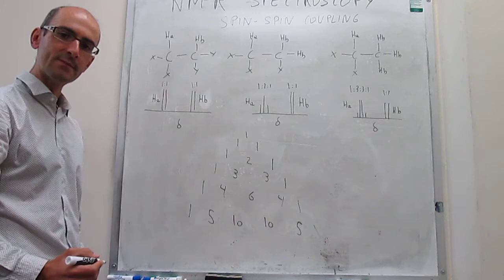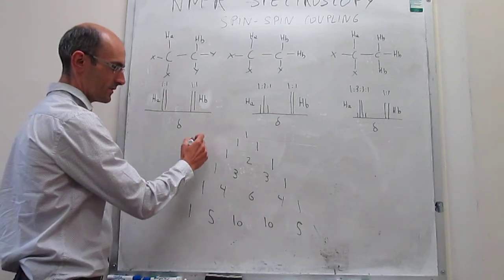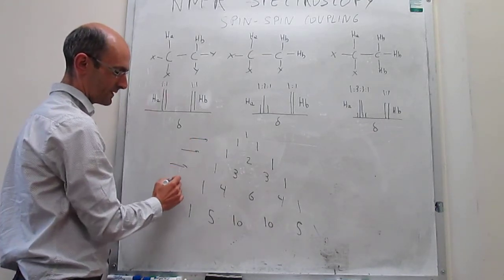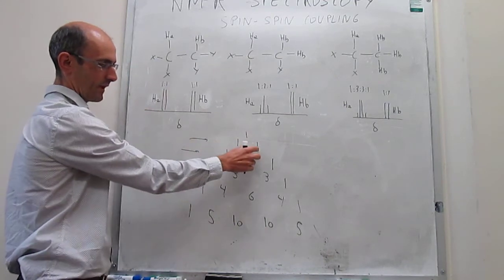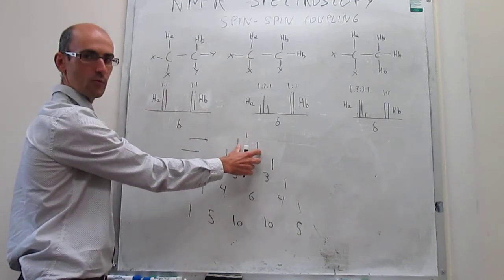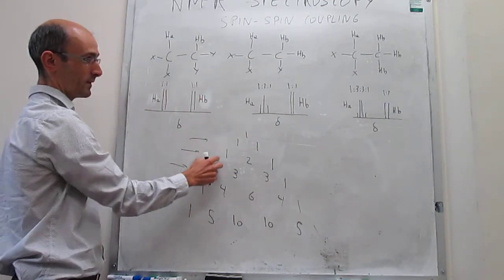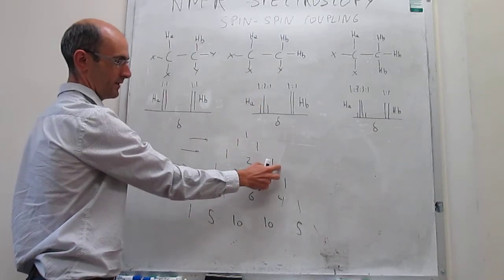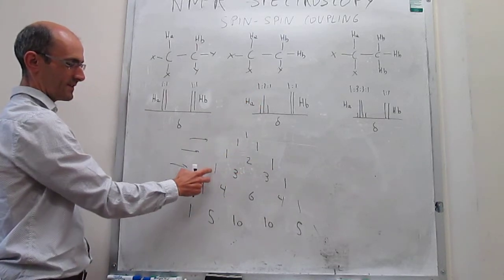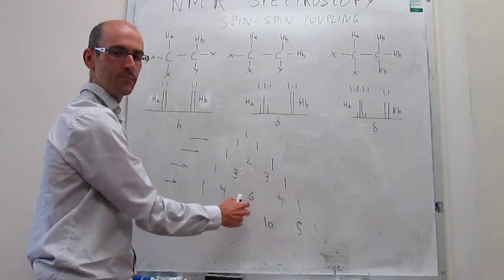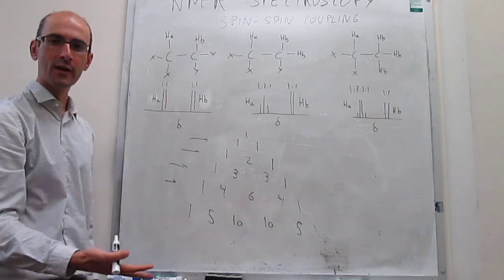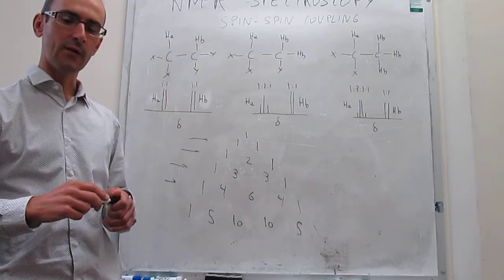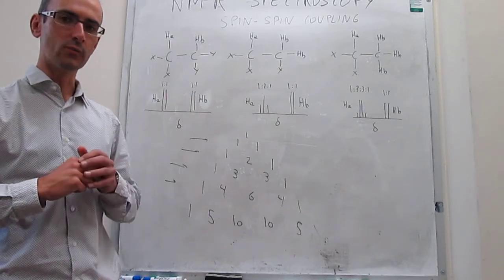Something important about Pascal's triangle is that it gives the relative intensities for a given multiplicity. A doublet has intensity one-to-one, a triplet has intensity one-to-two-to-one, and a quartet has intensity one-to-three-to-three-to-one. And so forth — if you have a quintet, sextet, or septet, you can see how that signal will turn out.